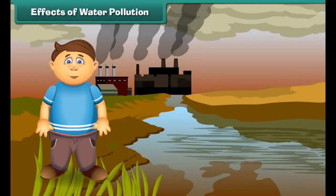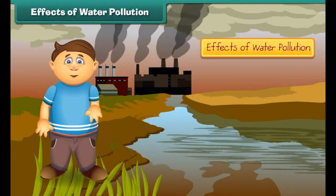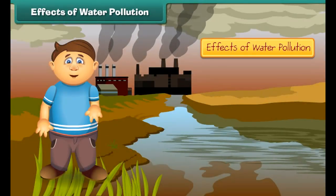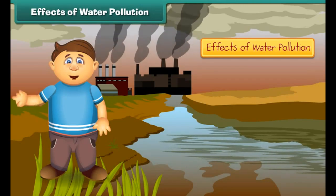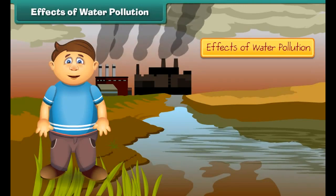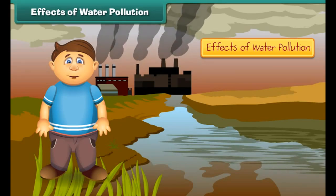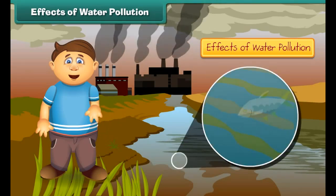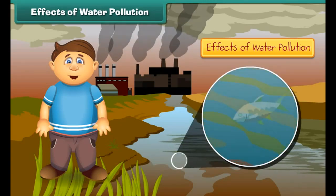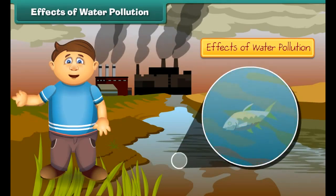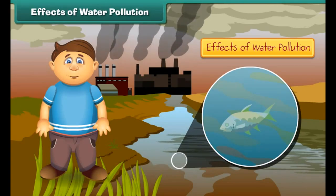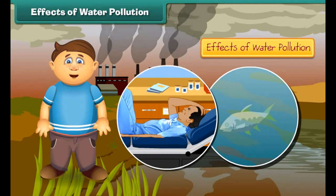Can we control water pollution? The answer is yes. To control water pollution, we should not dispose of garbage and harmful chemicals directly into ponds, lakes, and rivers.